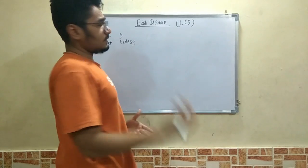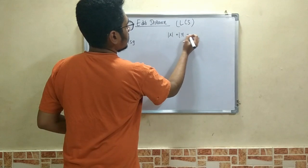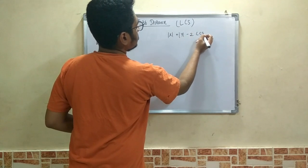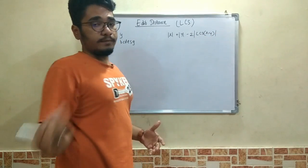The edit distance is given by mod x plus mod y minus two times of LCS x comma y. That is the longest common subsequence between x and y.